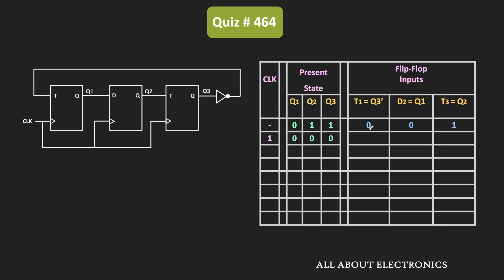Because in the T flip-flop, when the input is equal to 0, it will return the previous state. So previously, since Q1 was 0, in the next stage it will remain 0. Likewise, since D2 is 0, after applying the clock signal, the output will also remain 0 — so the new value of Q2 will be equal to 0. And since T3 is equal to 1, after applying the clock signal, the output will toggle. Since Q3 was 1, in the next stage it will become 0. So the new values of Q1, Q2, and Q3 are equal to 000.